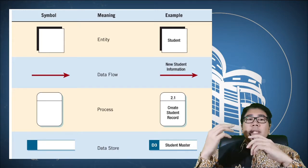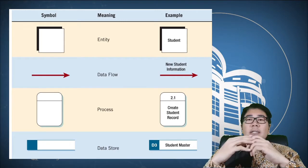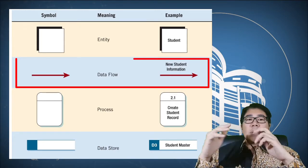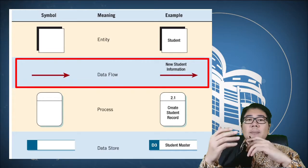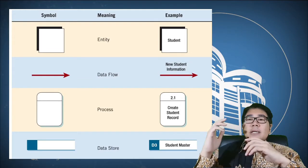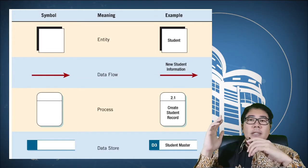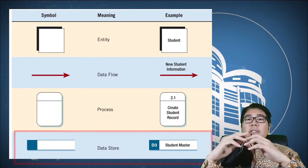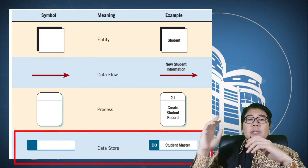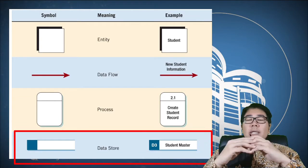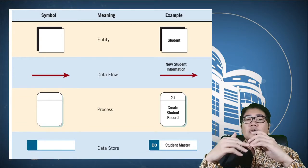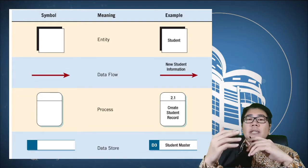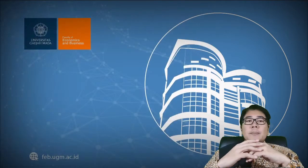The third one is an arrow line to describe the flow of the data. And the last one, drawn as an open-ended rectangle as shown in the figure, describes the data store, which is also the source and receiver of the data.